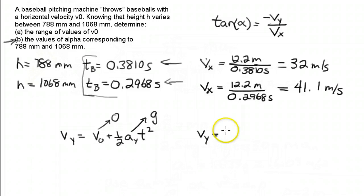So we can calculate the two v sub y's. In one case, these are both going to be negative because the g is in the negative direction, 9.8 meters per second squared times the time. So I'll put this one is 0.3810 squared.